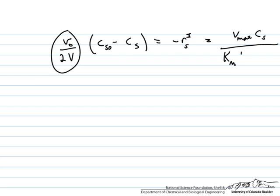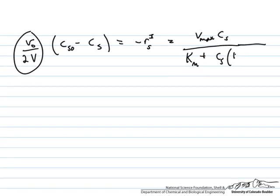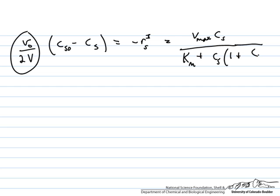In uncompetitive inhibition the substrate binding term, the Michaelis constant, doesn't change, but now the concentration of the substrate is multiplied by 1 plus Ci divided by Ki, where Ki is the binding constant for the inhibitor, and that is really what we want to solve for.